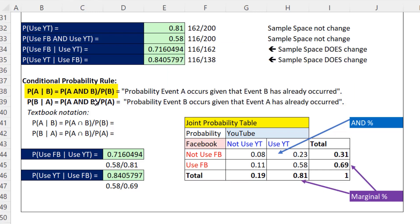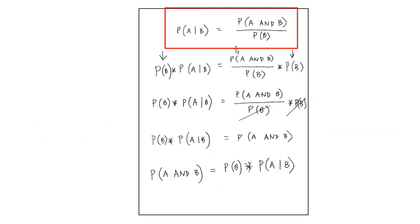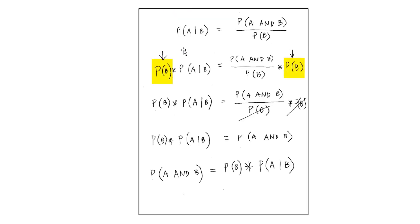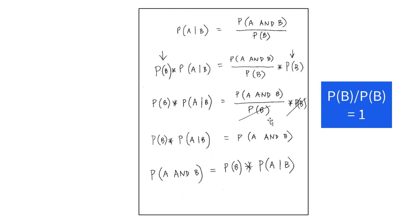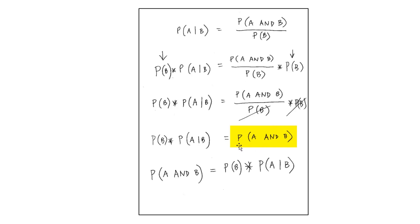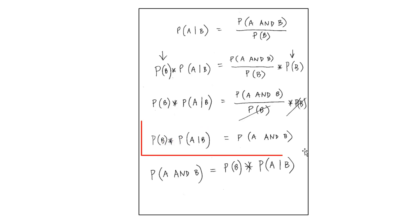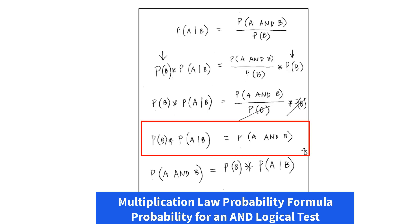From the Conditional Probability Formula, we can transform it to get our Multiplication Law of Probability formula. If we take this formula and multiply both sides by the probability of B, that gives us probability of B in both the denominator and numerator, so we cancel them out. That gives us the probability of event A AND B — using multiplication, we take probability of B times the probability of A given that B occurred. That's our Multiplication Law of Probability formula.